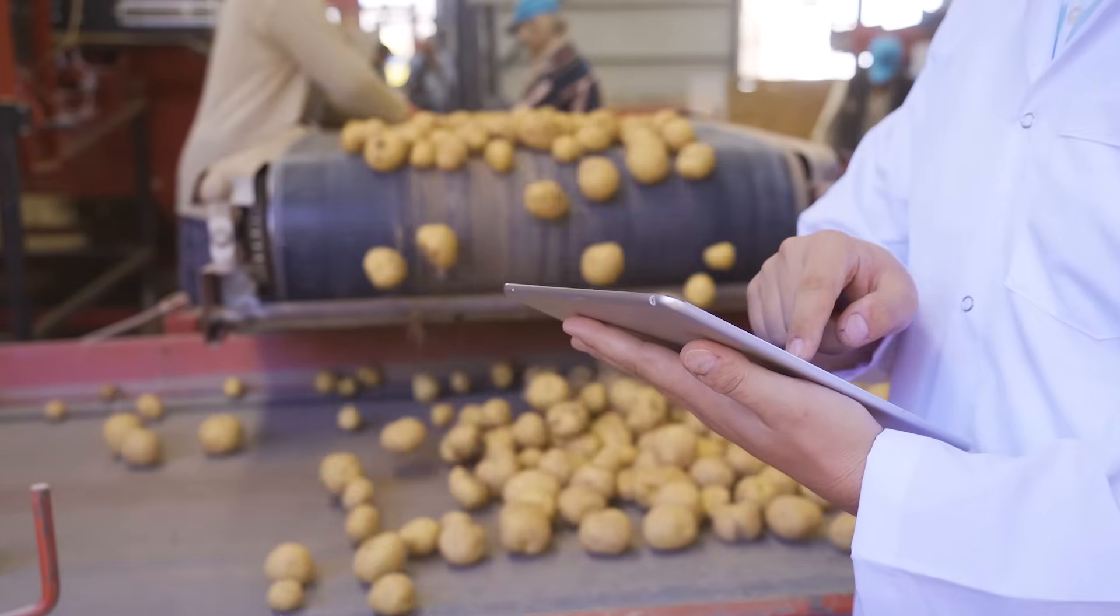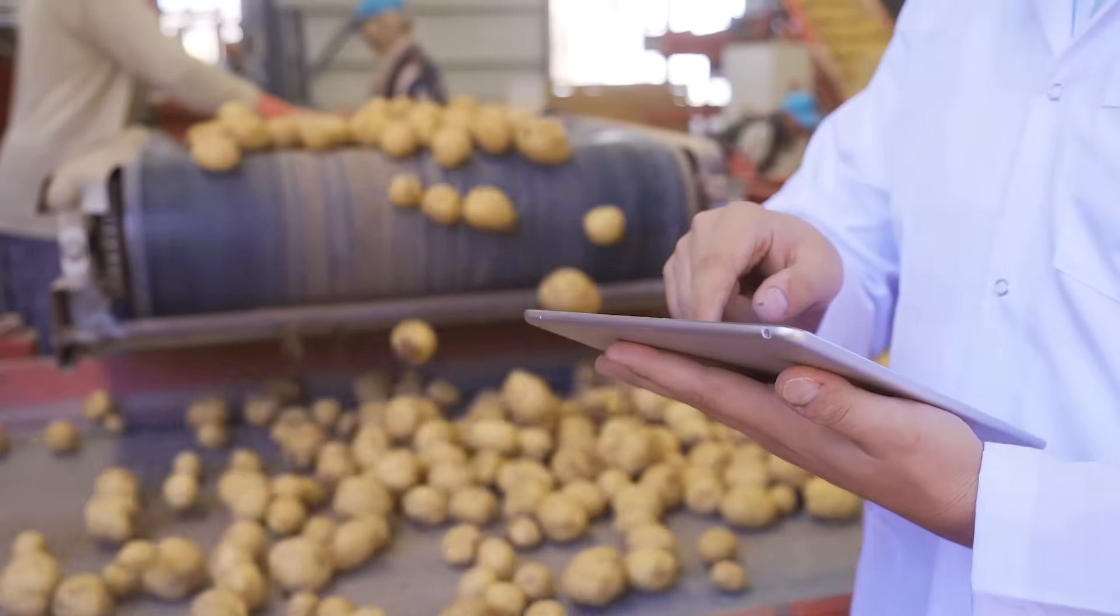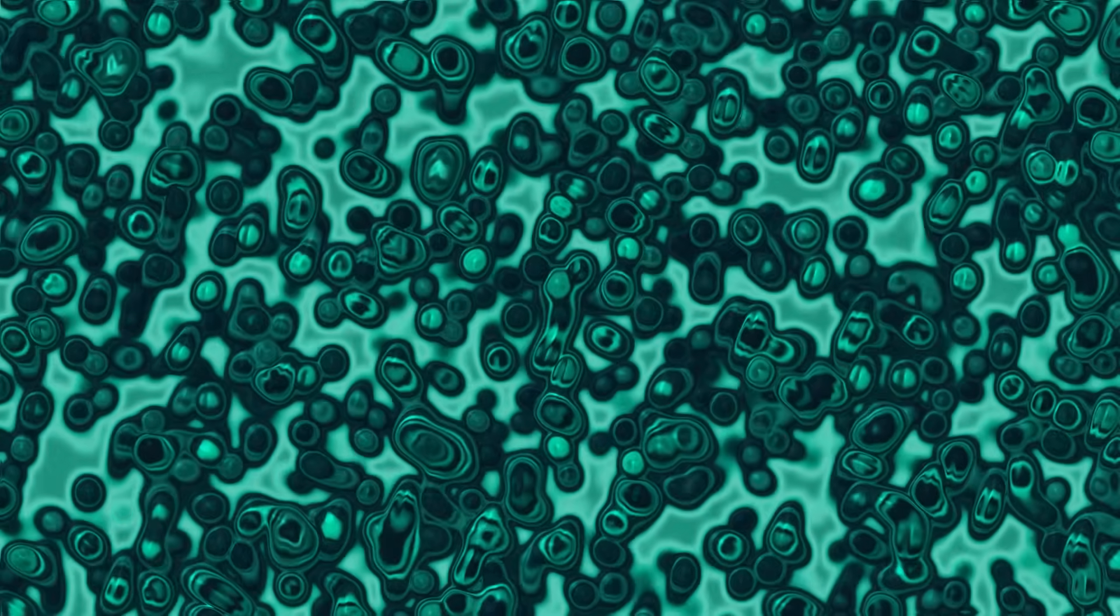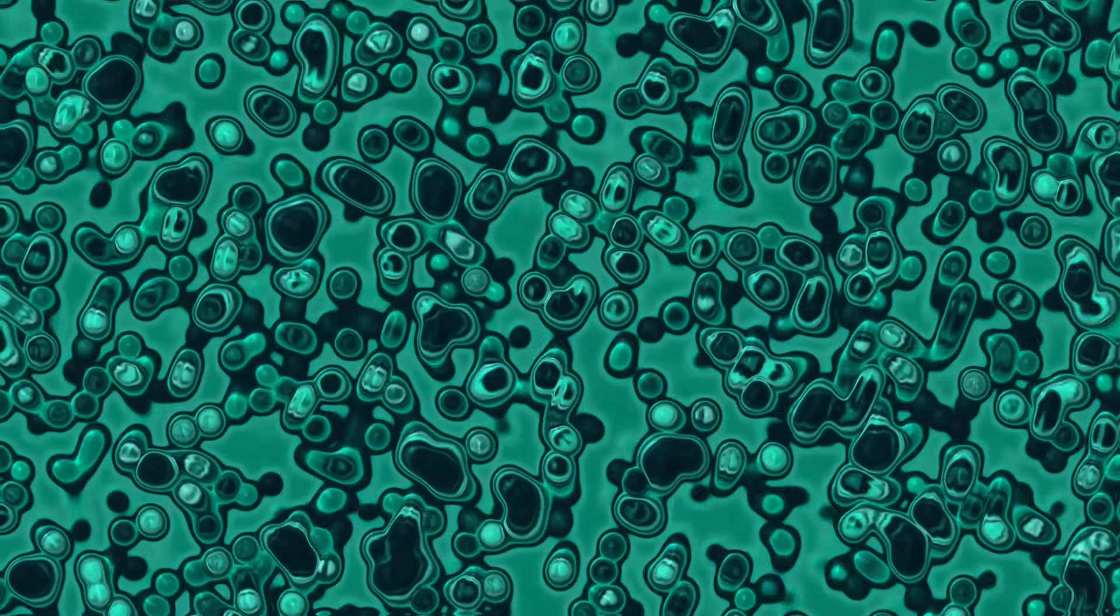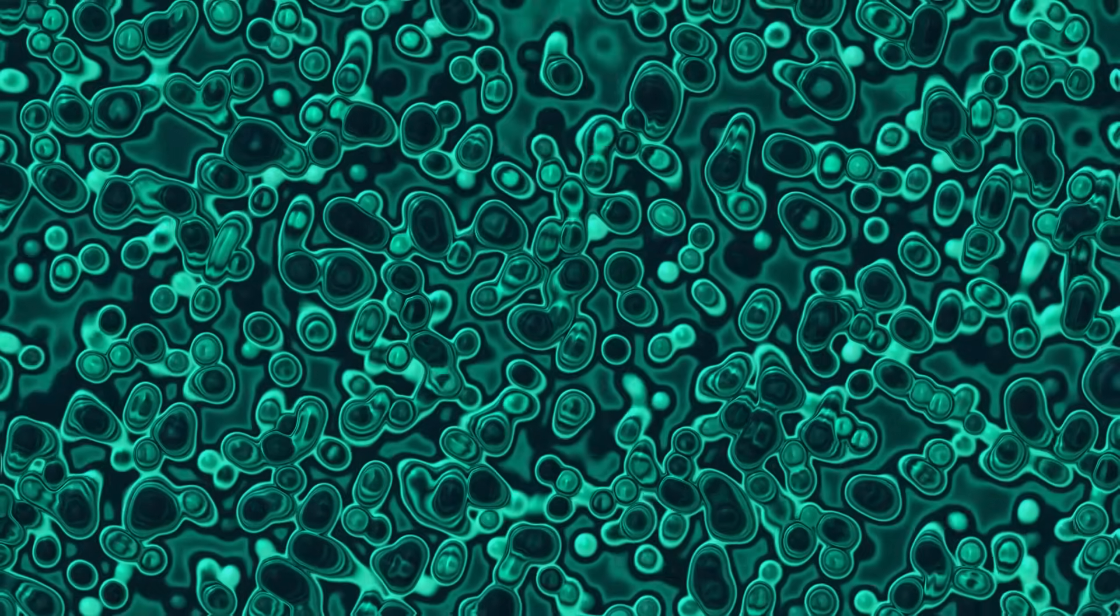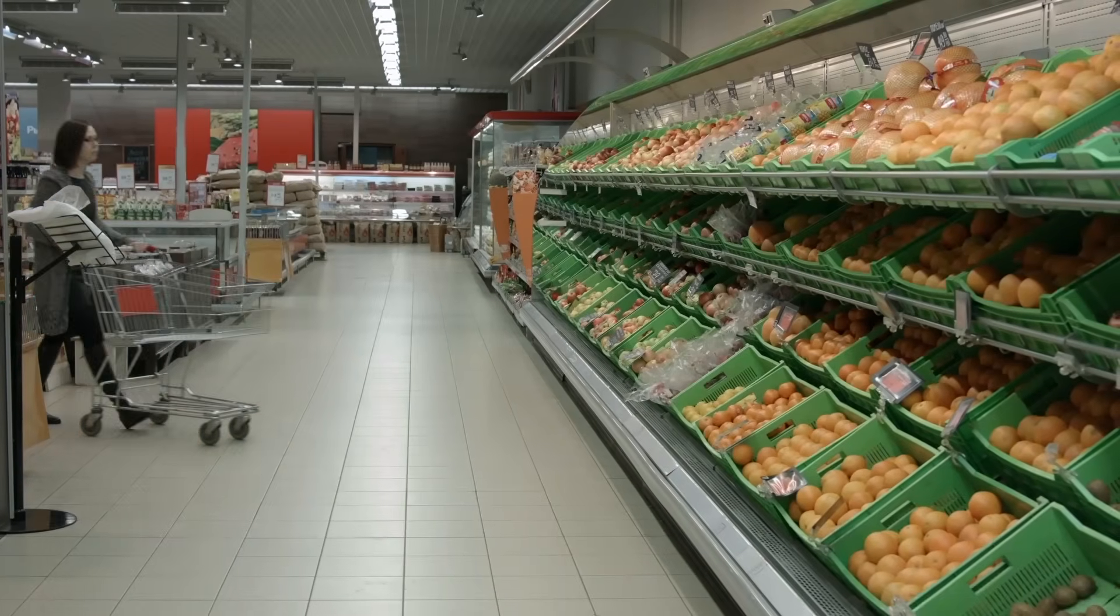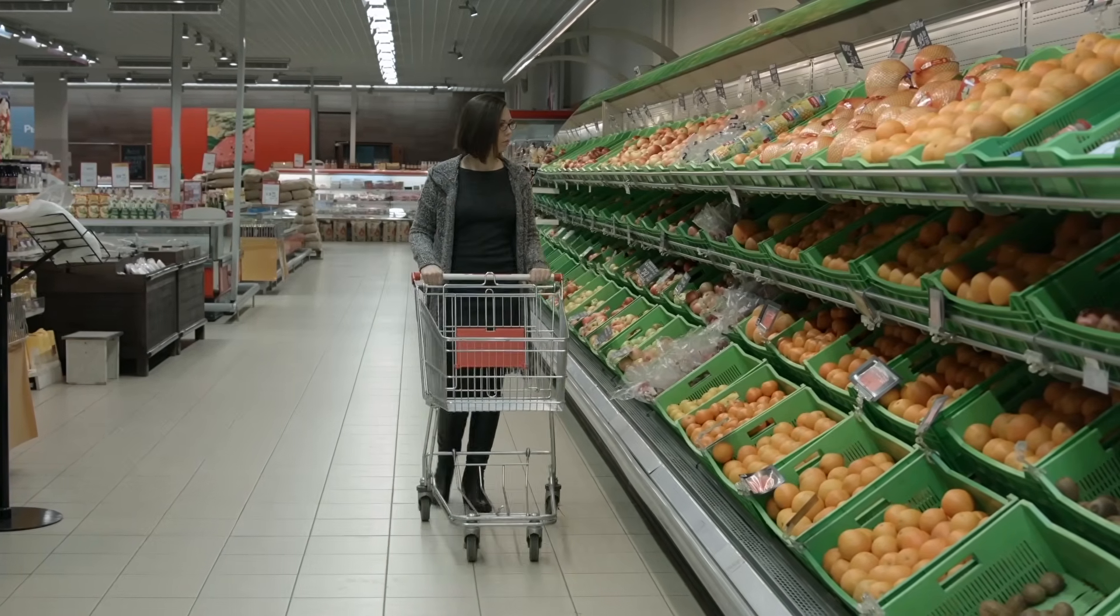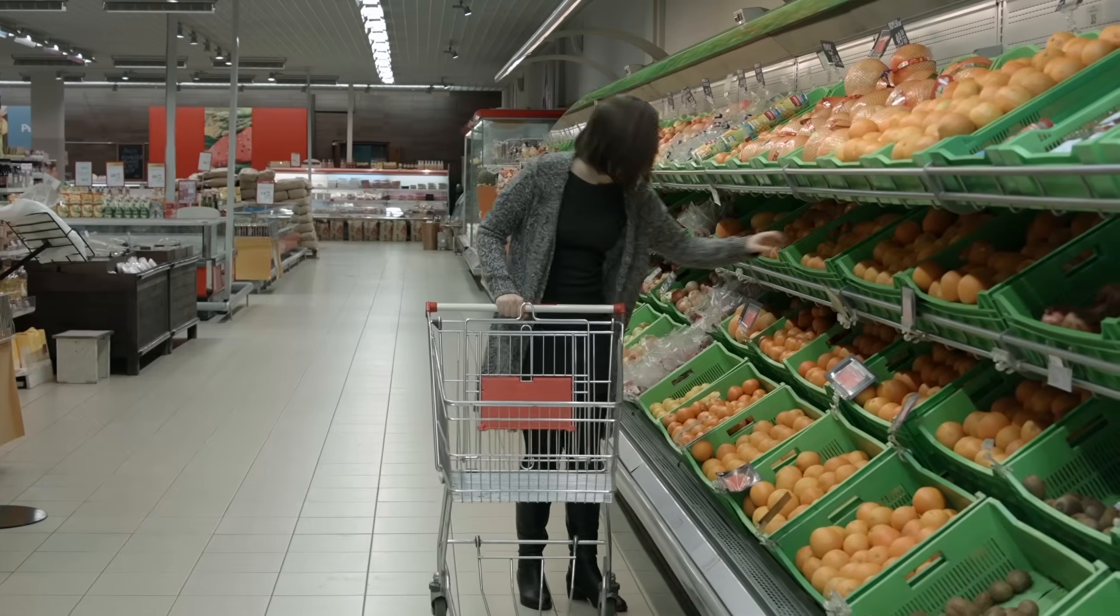Food quality assessment has become another frontier for UPE technology. The freshness of produce, the potency of medicinal herbs, and even the detection of bacterial contamination can all be evaluated through bio-photon analysis. Your next grocery store visit might involve scanning fruits and vegetables with UPE detectors to determine their optimal ripeness and nutritional value. The days of squeezing avocados and hoping for the best could become a thing of the past.